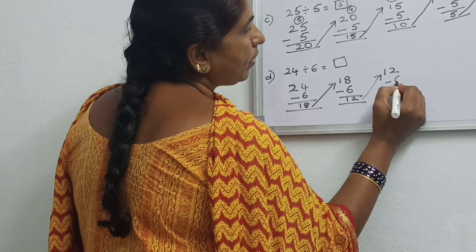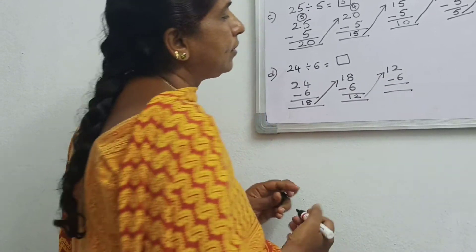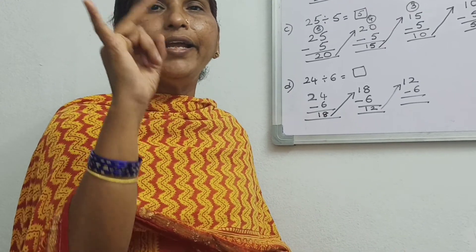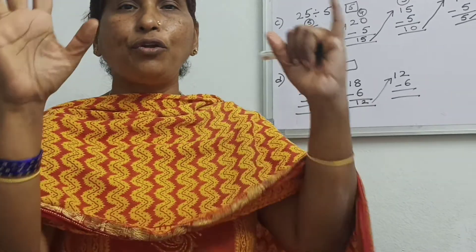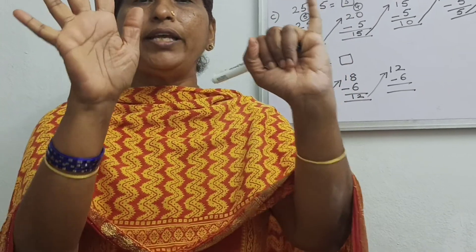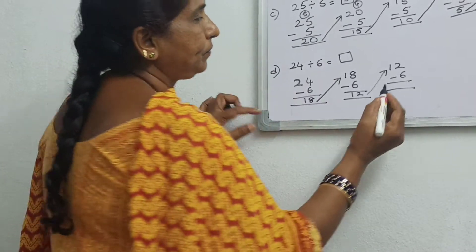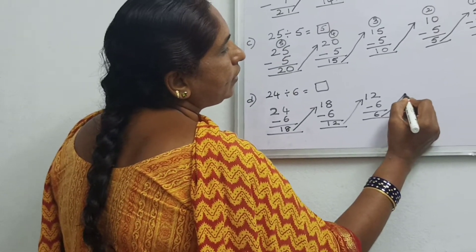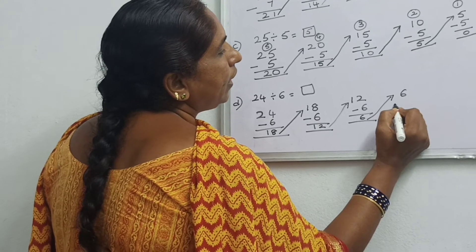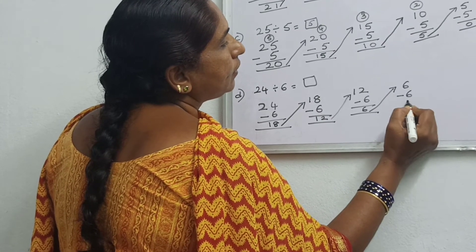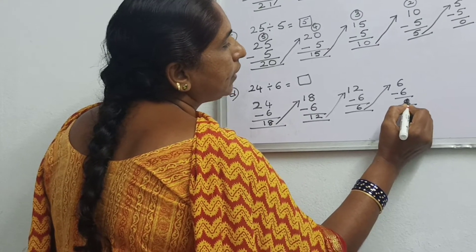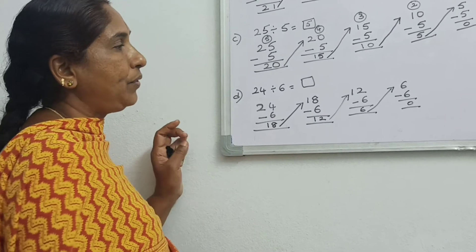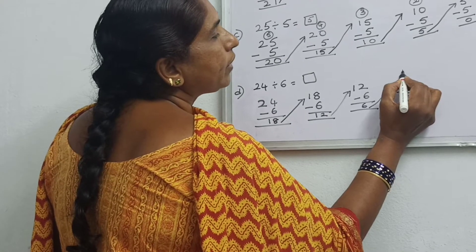Again you have to subtract with 6. Count 6 upward: 7, 8, 9, 10, 11, 12. How many? 6. Again take this 6 — again minus 6. Divisor is 6. 6 minus 6 is equal to 0.